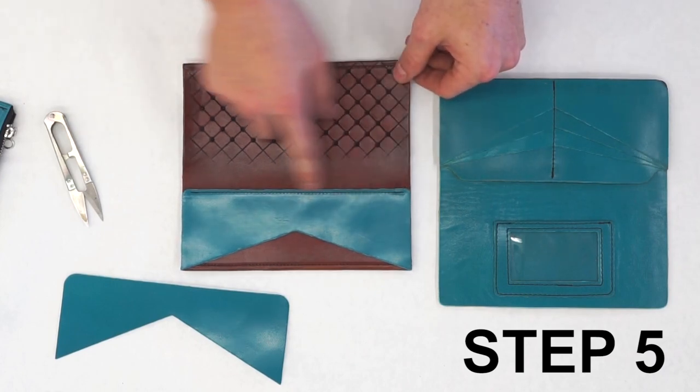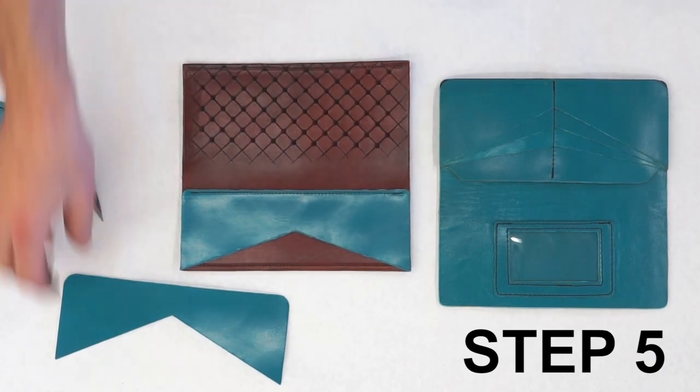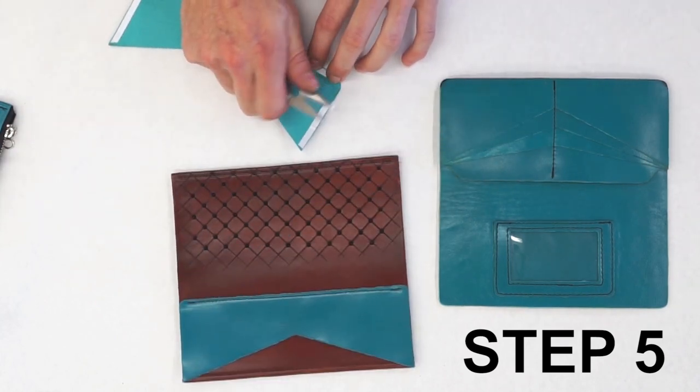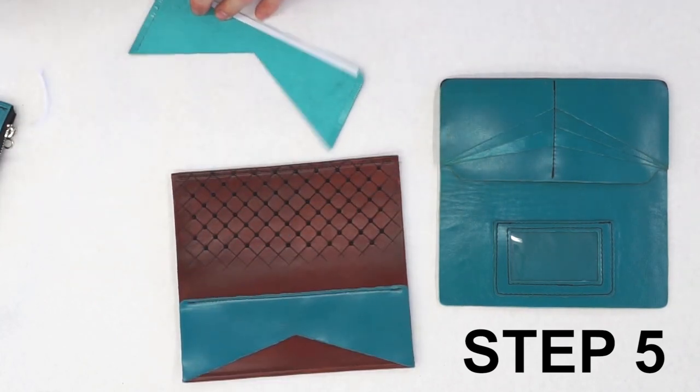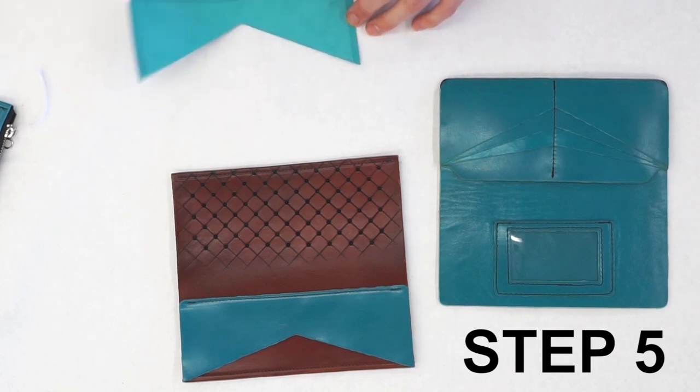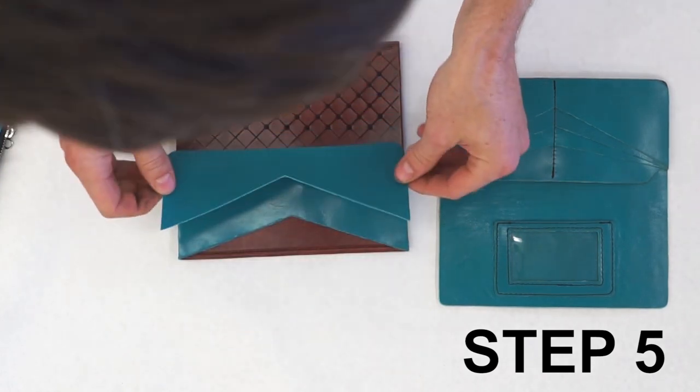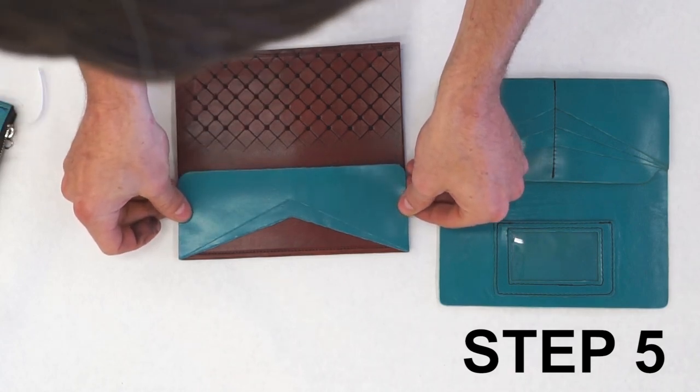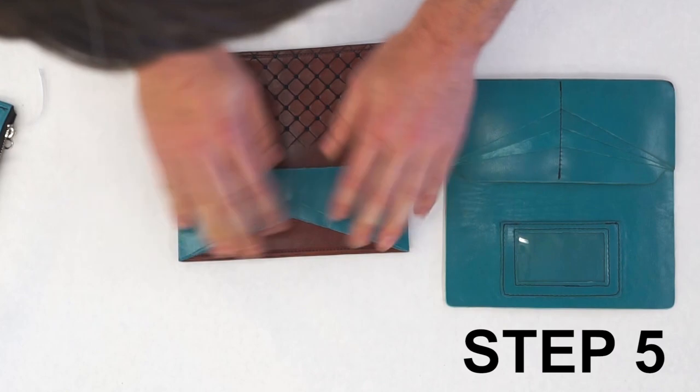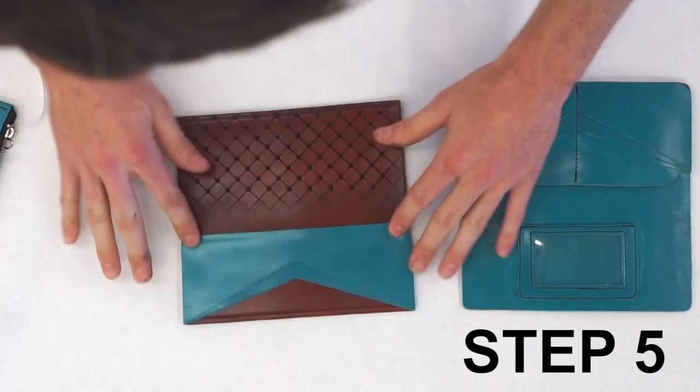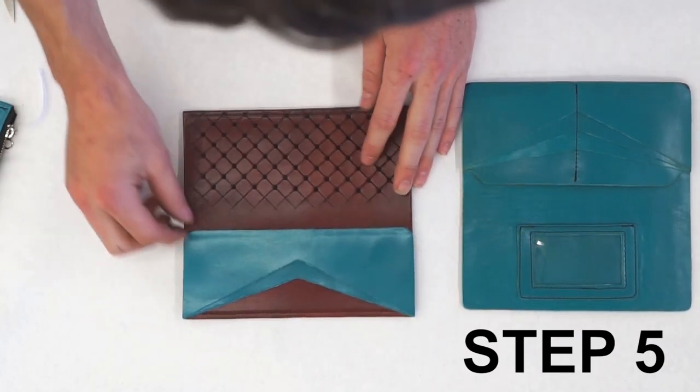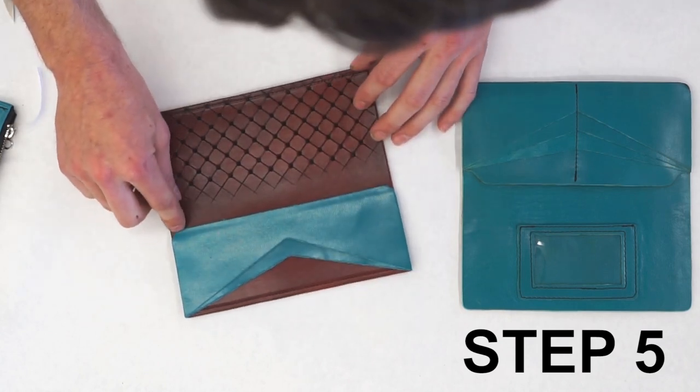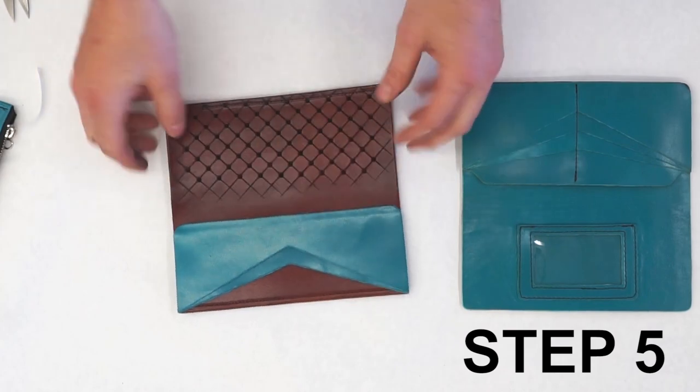Alright, once we have our stitch all the way across the bottom of the first pocket, we will peel the tape of the second pocket, apply contact cement where necessary, and line up the top two corners with the first pocket. Now this pocket is going to be a little bit taller, so it's going to hang off about a quarter of an inch and we'll run another stitch line with about an eighth inch seam allowance all the way across the bottom of this one.